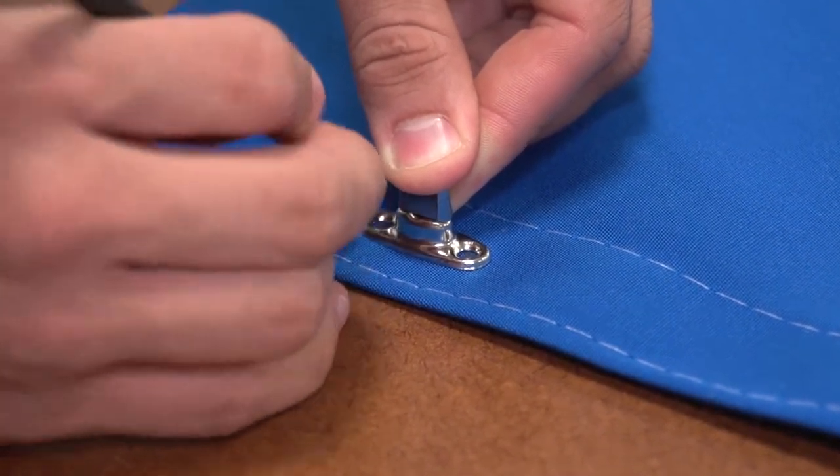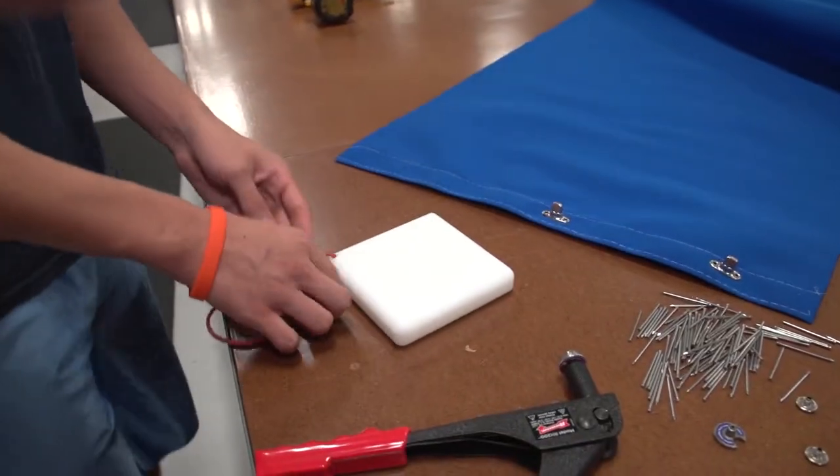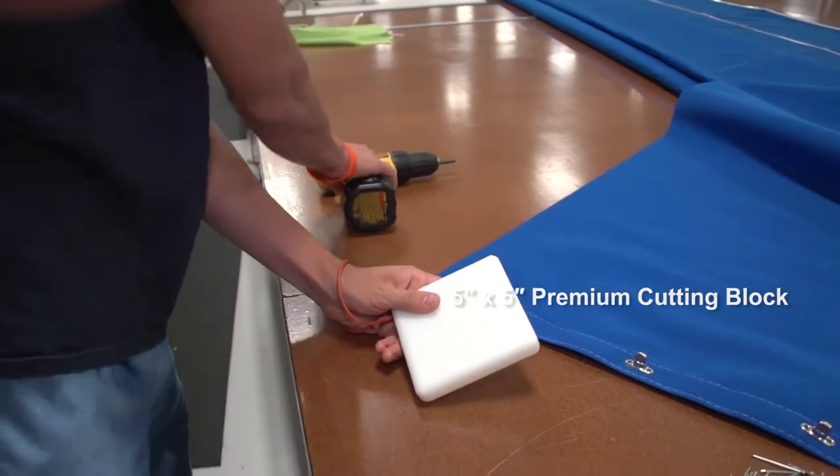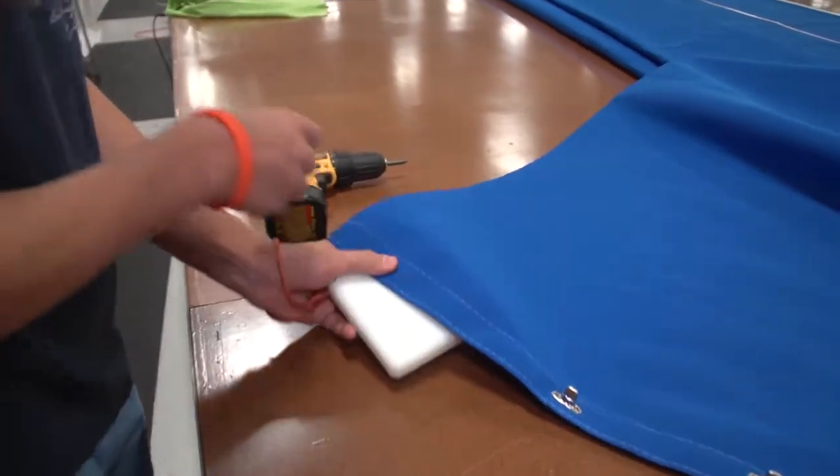Now use the premium cutting block that is included in the kit and position it on the back side of the fabric application. Use the drill with the spin cutter installed to make holes through the fabric where your pencil marks were made.